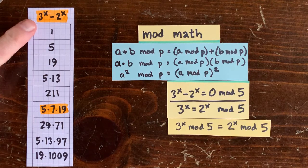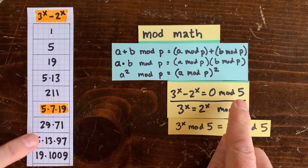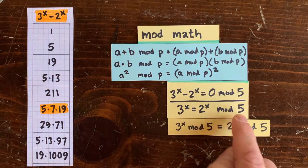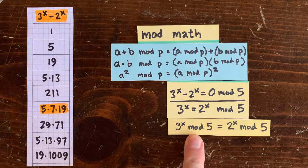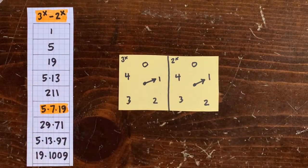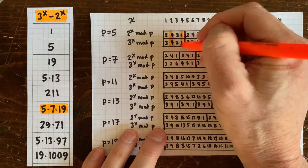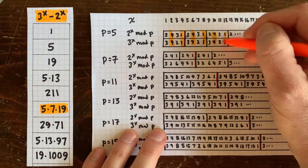We're really interested in when 3 to the x minus 2 to the x is divisible by 5, which we can rewrite as 3 to the x equals 2 to the x mod 5. That means they have the same remainder when divided by 5 — after x time steps, the crazy clock on one planet shows the same time as the crazy clock on the other. You can see that happens when x is 2, 4, 6, etc., which explains why the numerator is divisible by 5 when x is even.